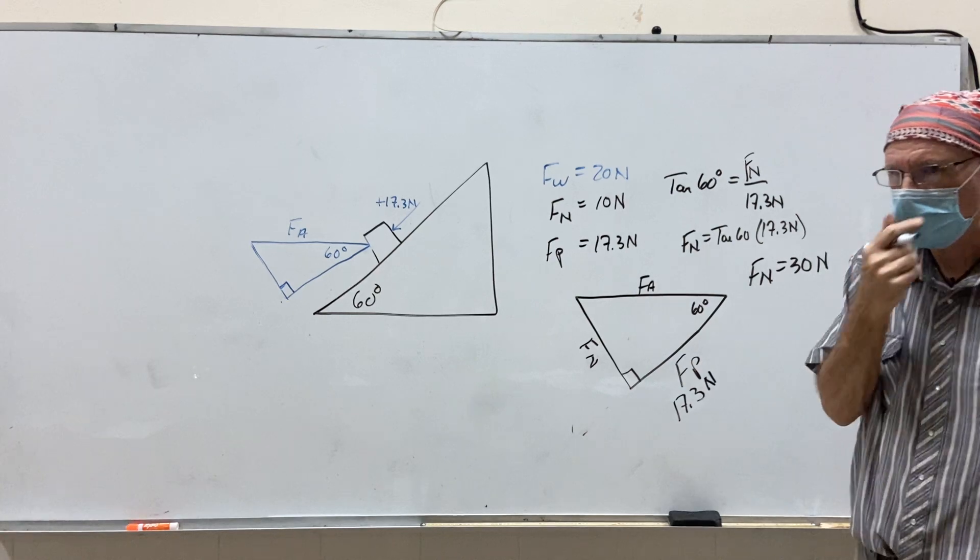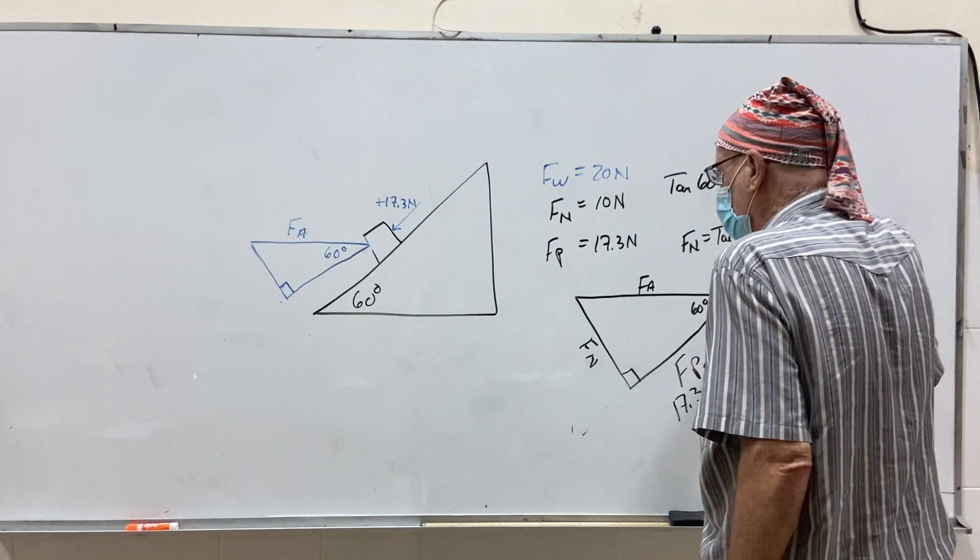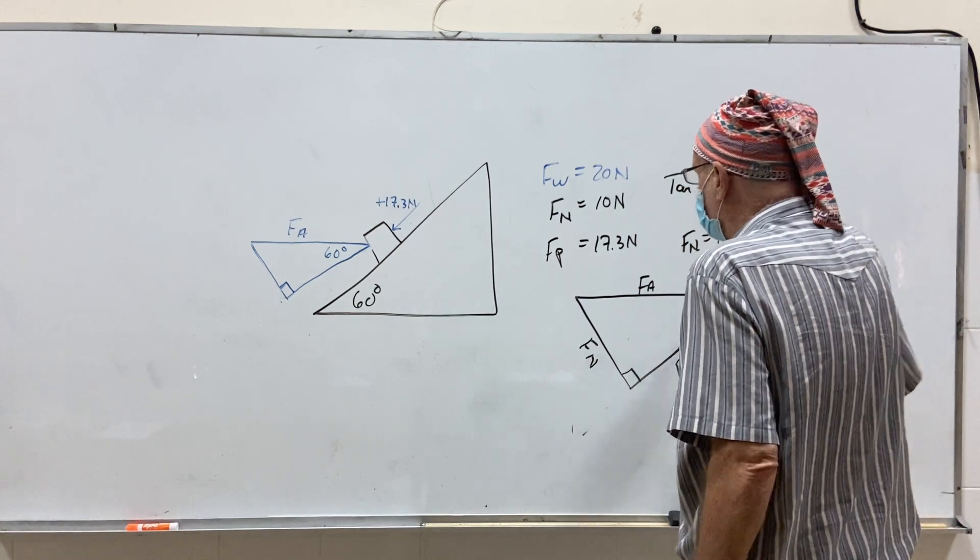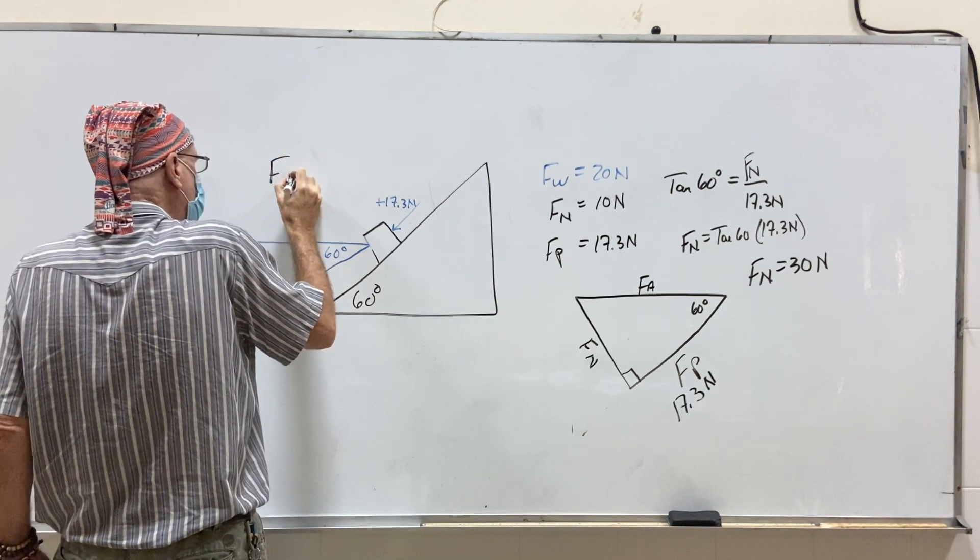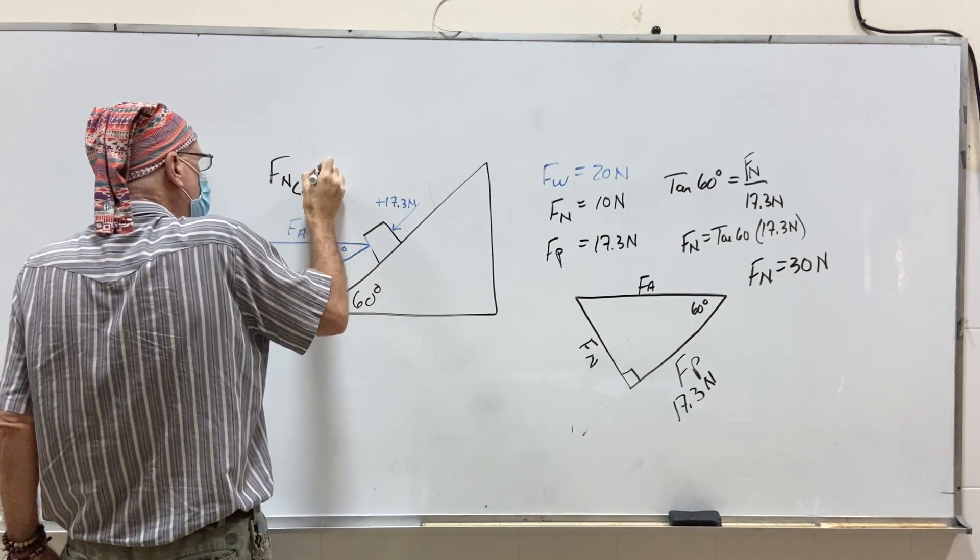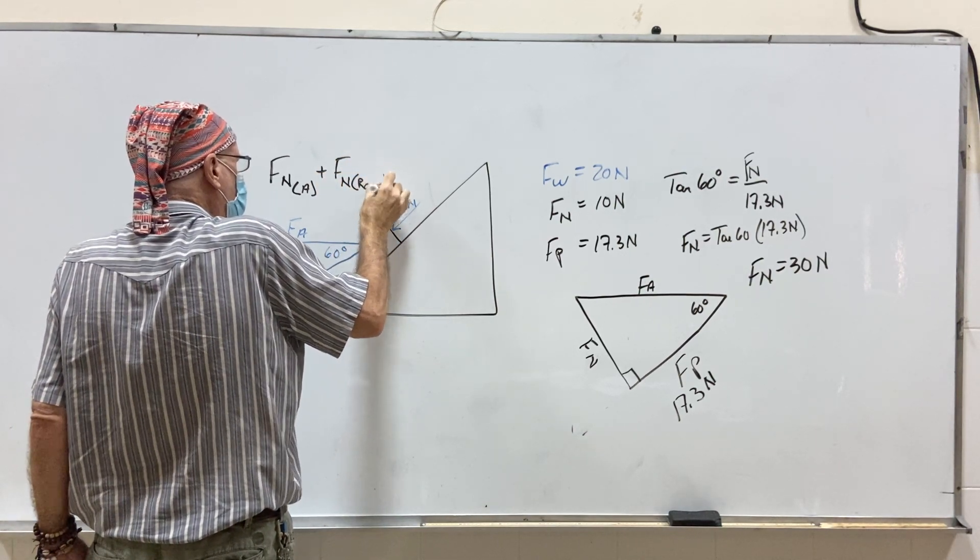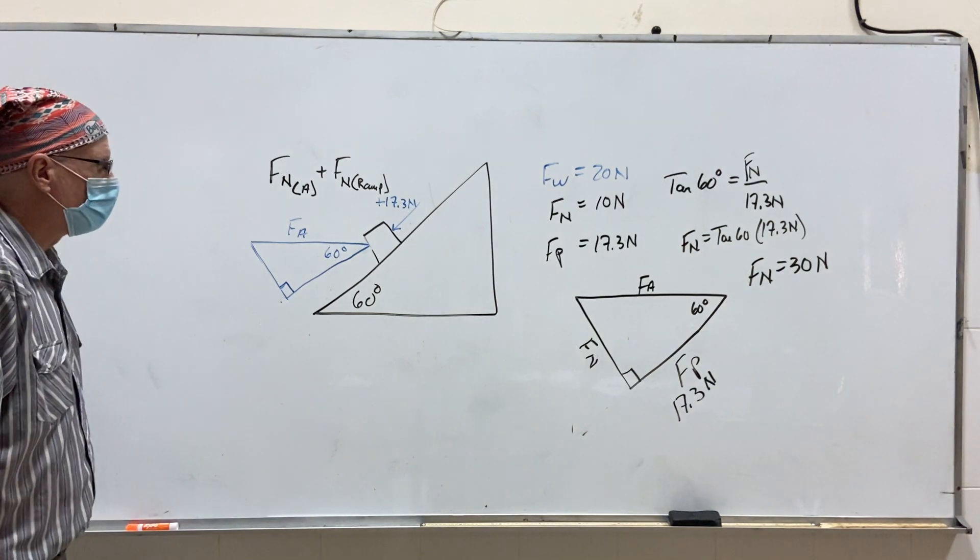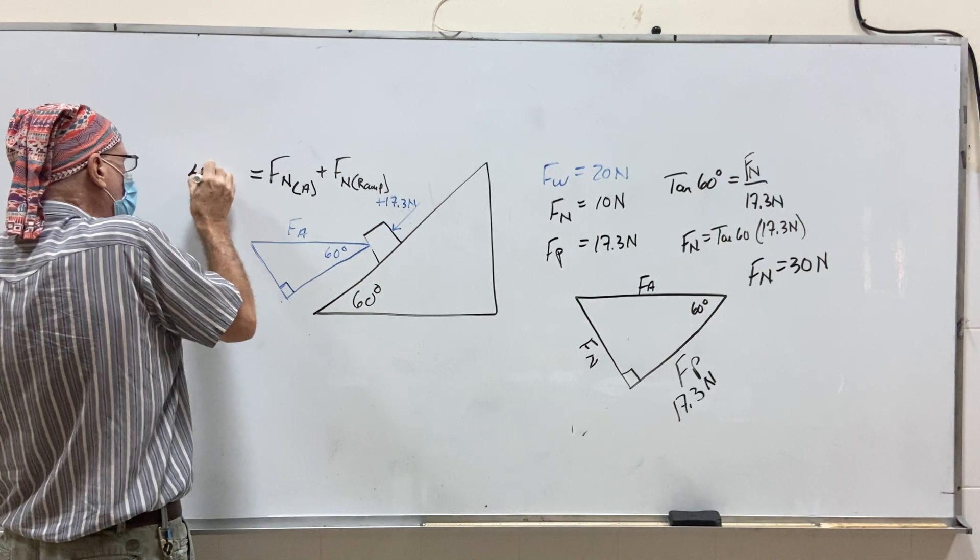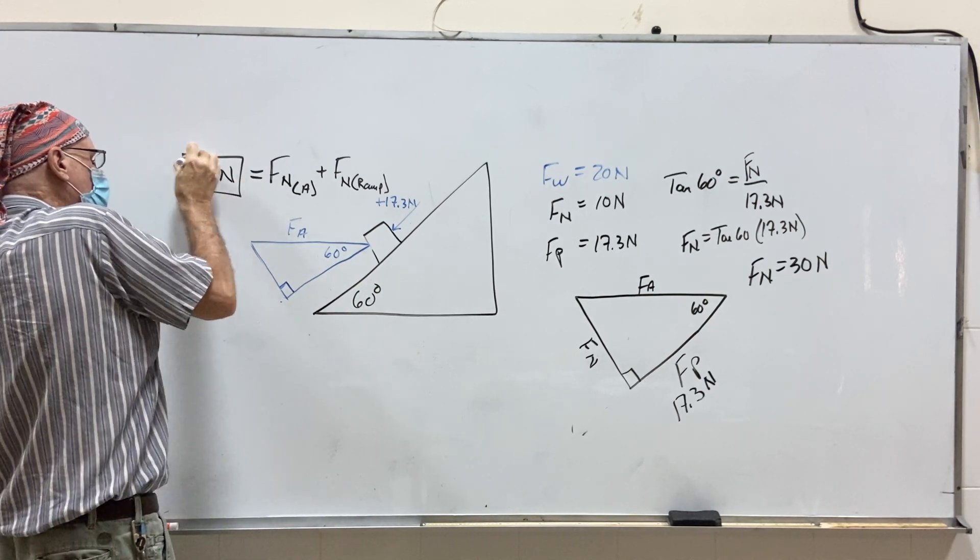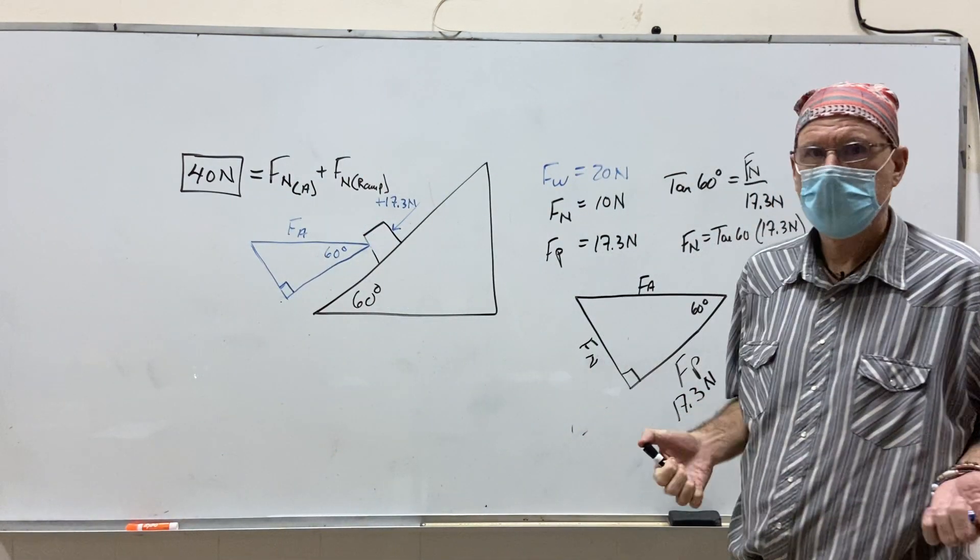Correct? Yes or no? Right? So what is 30 here plus 10 here. So this is going to be fn and that's from the applied plus fn from the ramp. Right? So it's going to be what? 40. You get it, ma'am? You get it? Yes. We're done. Thank you.